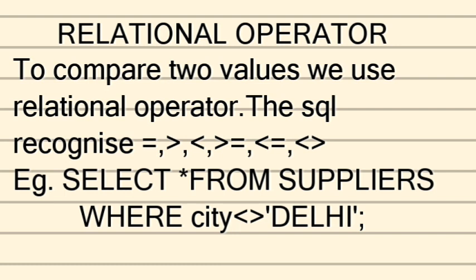We use relational operators to check based upon some condition whether it satisfies or not. Here I have a query: SELECT * FROM suppliers, which is one of my tables. In the WHERE clause, I have the condition that city does not equal Delhi — using those two angular brackets. This means: show me all cities that are not equal to Delhi, and only that result will be shown.